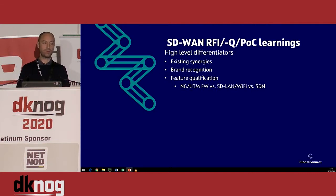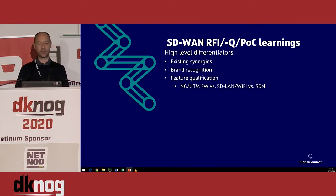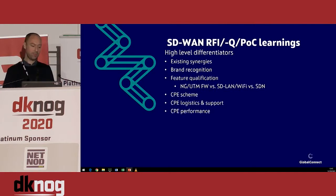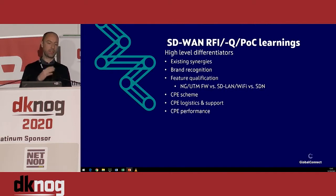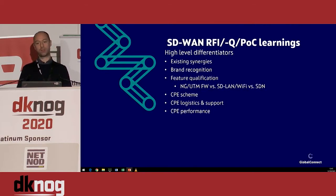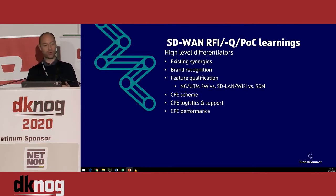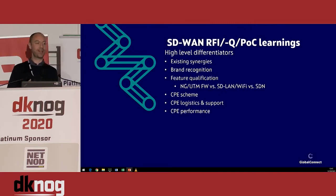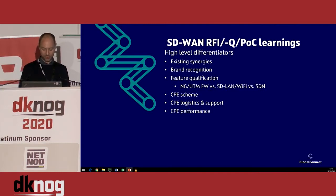There might be some new players out there, but if customers want to see a specific brand, that's something to consider. Then there's the feature qualification. The CPE scheme — where you need to decide on branded, certified, or white-label. Following that, there's always the logistics and support issue, especially in these COVID days. Does the vendor have nearshore stock, or are you going to get everything from China? Are they prepared for crisis situations? Very relevant in these times. And then, of course, overall performance.